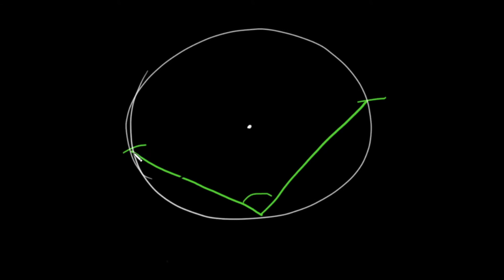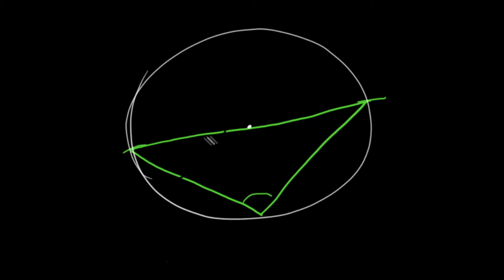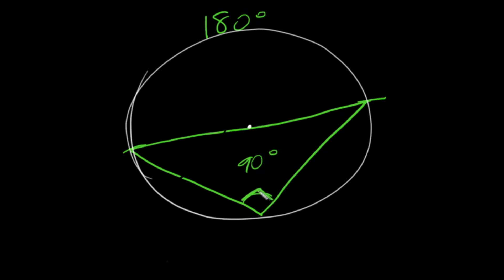Now what's interesting about this inscribed angle is that if we were to connect the endpoints of these two segments, it looks like it goes through the center. And if so, that would make this segment the diameter. As we know, the diameter splits the circle in half, which means that the arc from here to here is 180 degrees. Therefore, the inscribed angle is going to be exactly one half of that — 180 divided by 2 gives us 90 degrees. Therefore, this angle is a right angle.